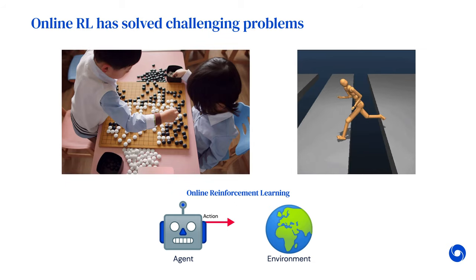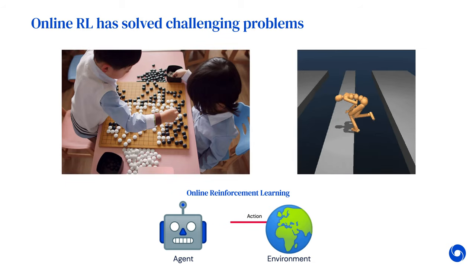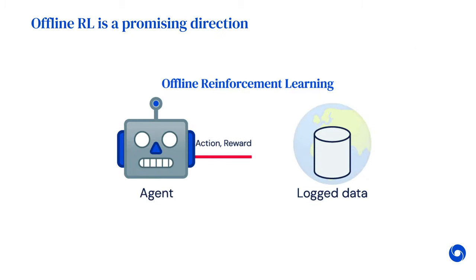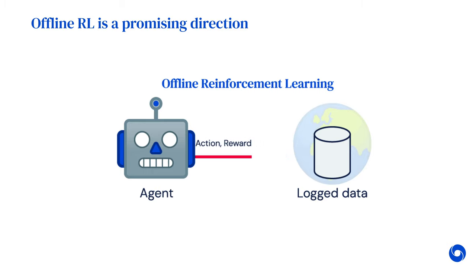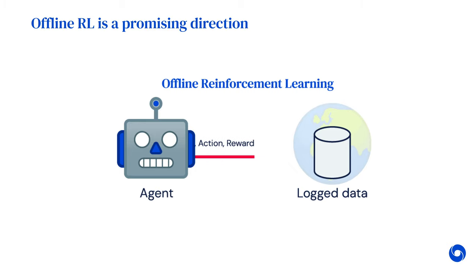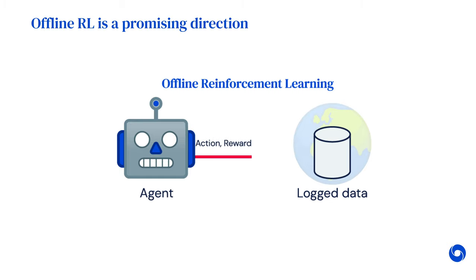Nevertheless, most real-world systems produce large amounts of data as part of their normal operation. Offline RL methods learn policies from log data, and recently they have shown promising results on well-known domains. However, non-standardized evaluation protocols, differing data sets, and lack of baselines make algorithmic comparisons difficult. Also, important properties common to real-world applications are underrepresented in the offline RL literature. This makes it difficult to assess the practicality of offline RL algorithms.